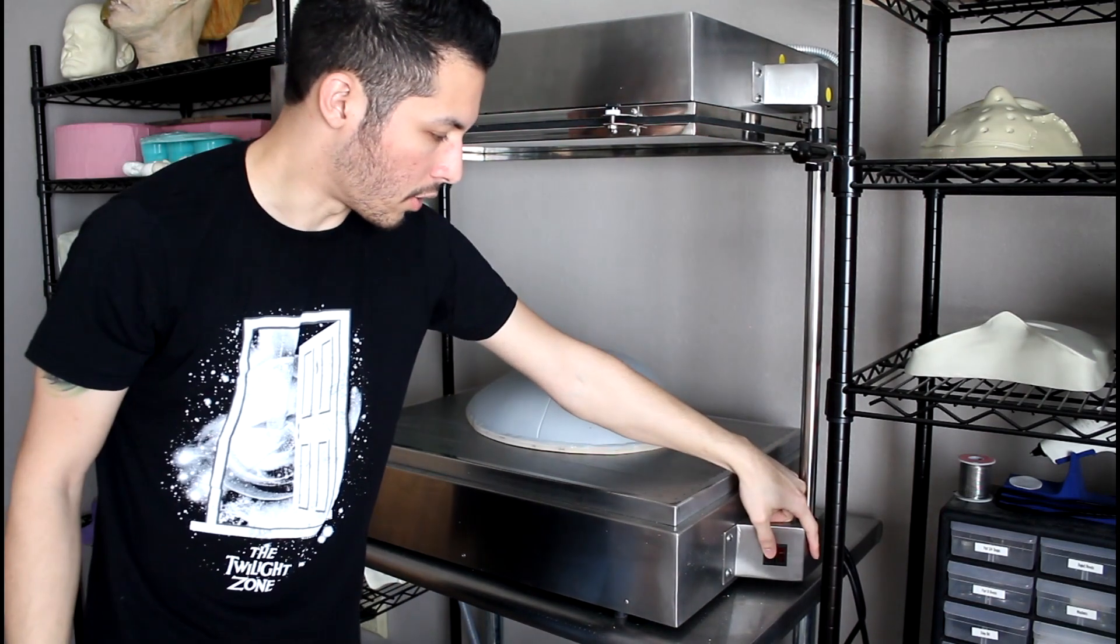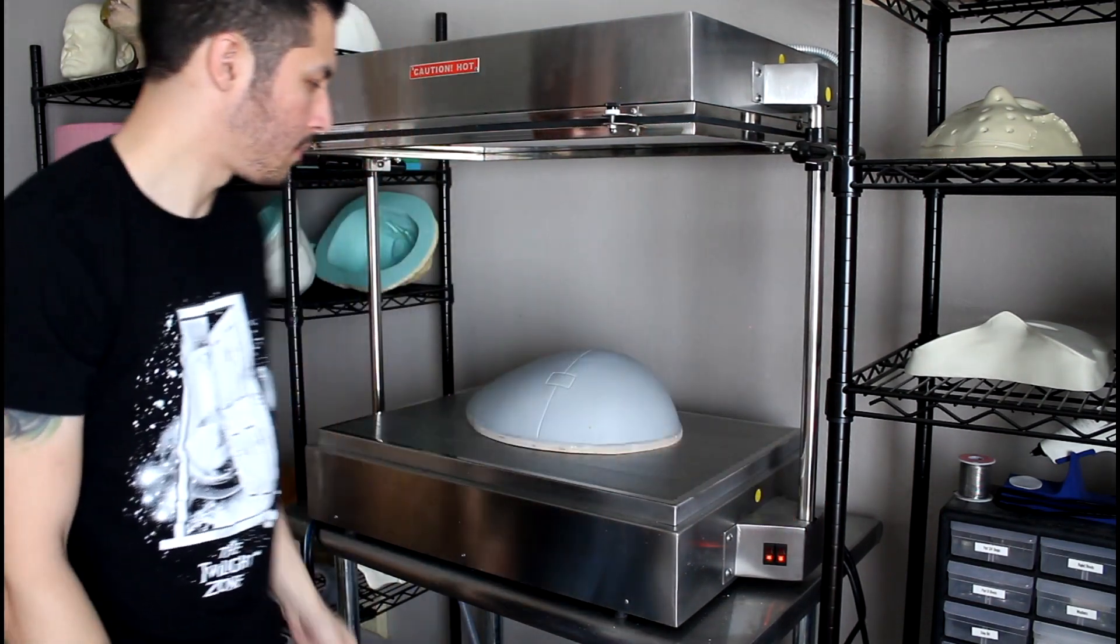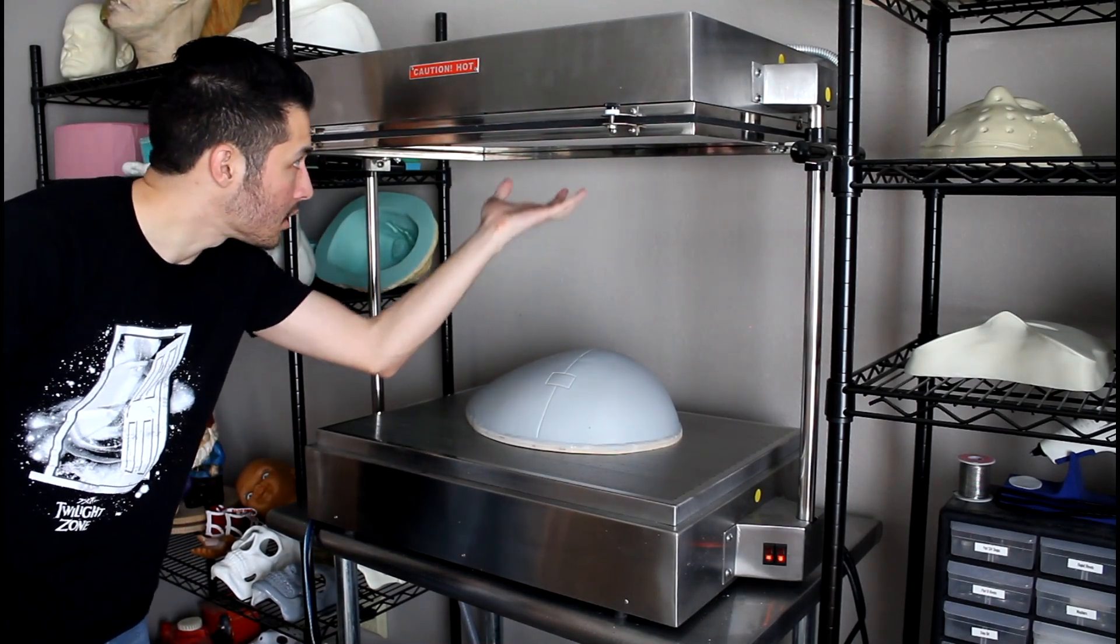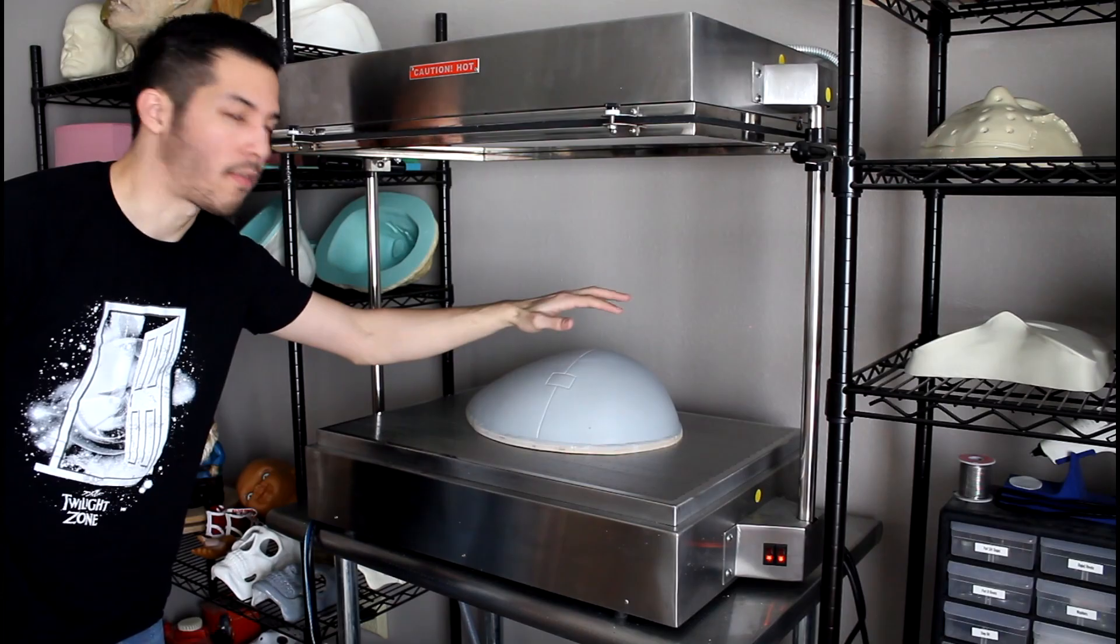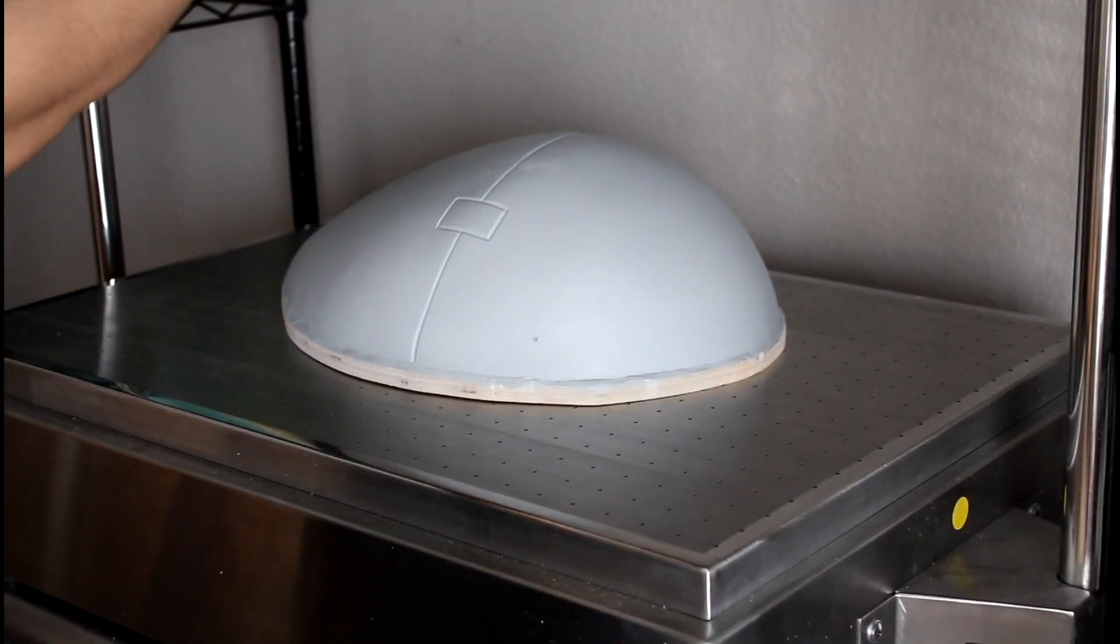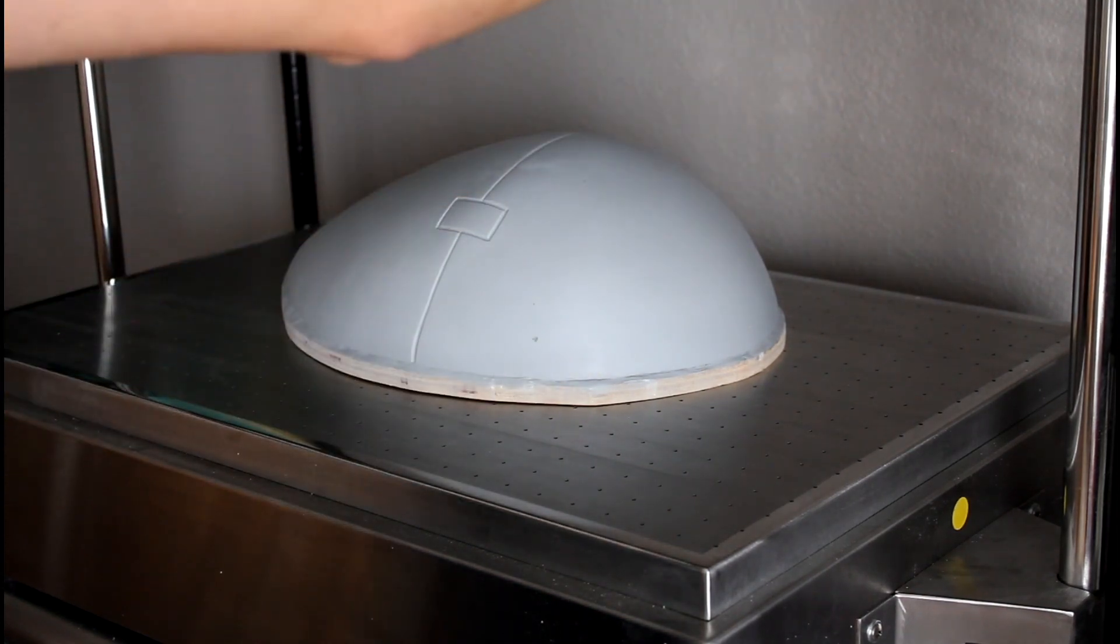And now I'm going to turn on both heaters. Now I'm going to let this warm up and once the plastic starts to droop a decent amount, I'm going to form my copy. So right now the plastic is softened just enough and I'm going to form my piece right now.